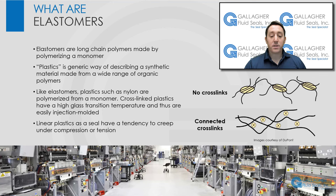Like elastomers, plastics such as nylon are polymerized from a monomer. Plastics that are cross-linked have a high glass transition temperature and thus are easily injection molded. However, some plastics have a more linear, densely packed, and rigid molecular chain. These linear plastics have a higher hardness and modulus than most elastomers. In general, plastics tend to conform to surfaces much less regularly than elastomers and require higher forces to create a seal.